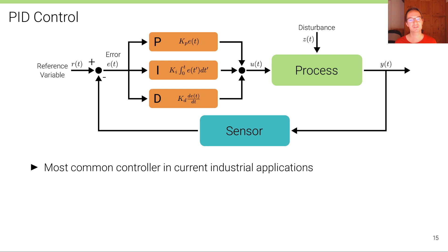PID controllers are the most common controllers in industrial applications. In probably 95% of all cases where you need a controller, a PID controller is used because of its simplicity and its broad application range.